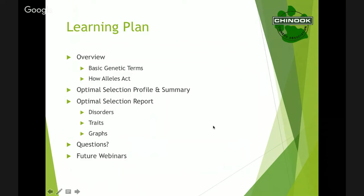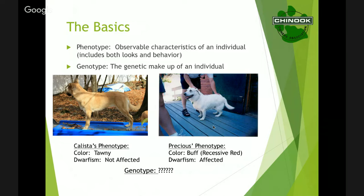We're going to kick off with basic genetic terms, starting with phenotype and genotype. Phenotype is the observable characteristics of an individual. You can see in the picture here that Callista on the left is tawny — that's a phenotypic trait. Phenotype includes behavior and working ability, not just morphology or color, but morphology and color tend to be where the term is used most because they're the most immediately apparent visually.